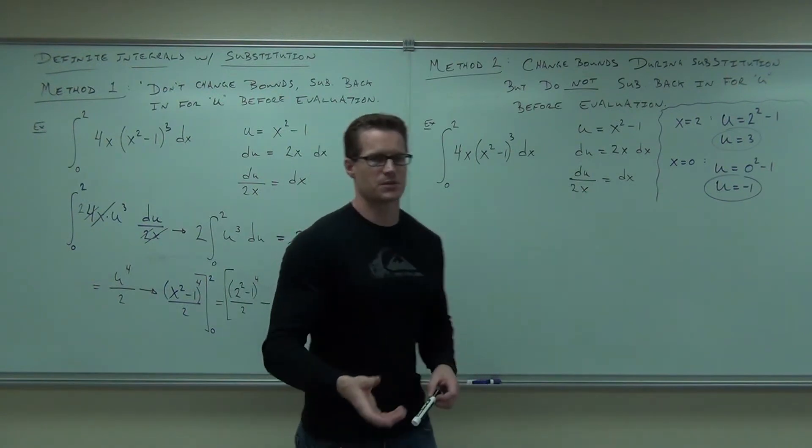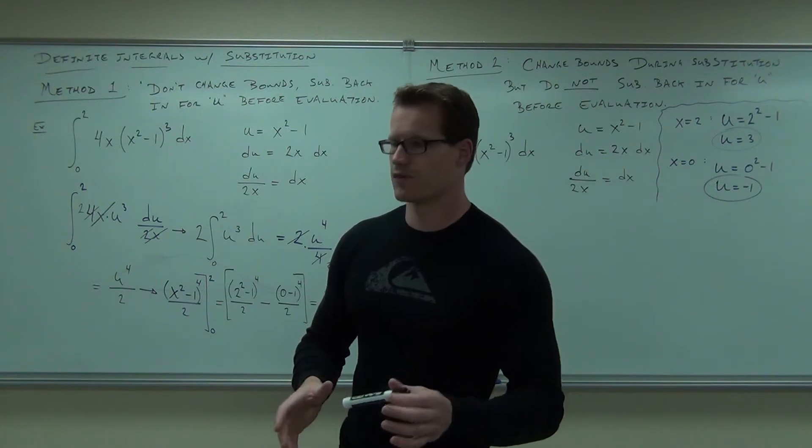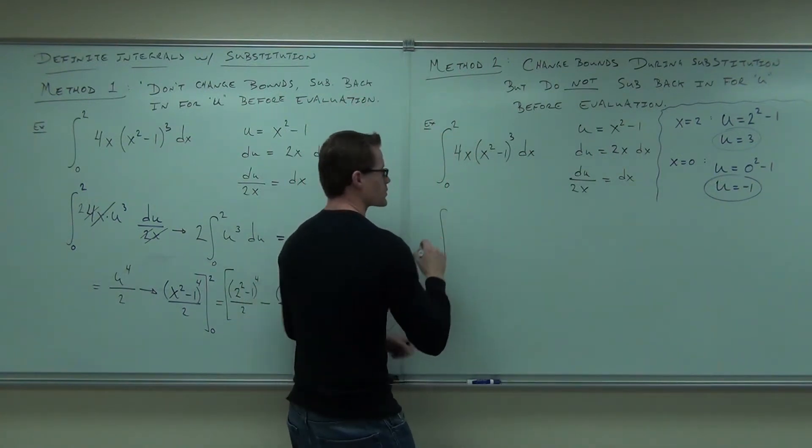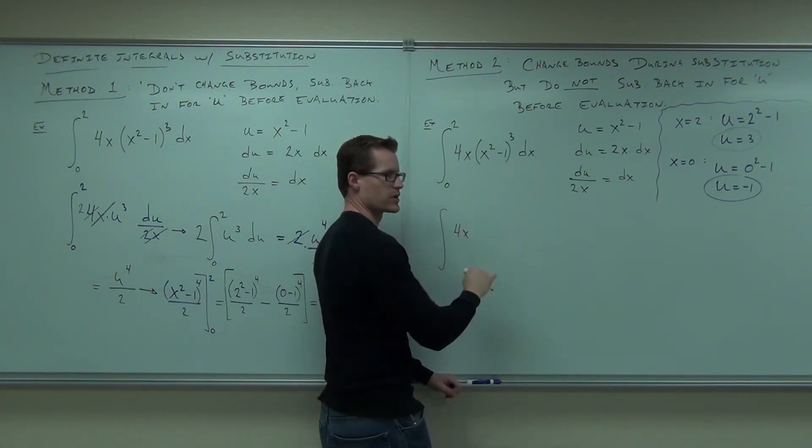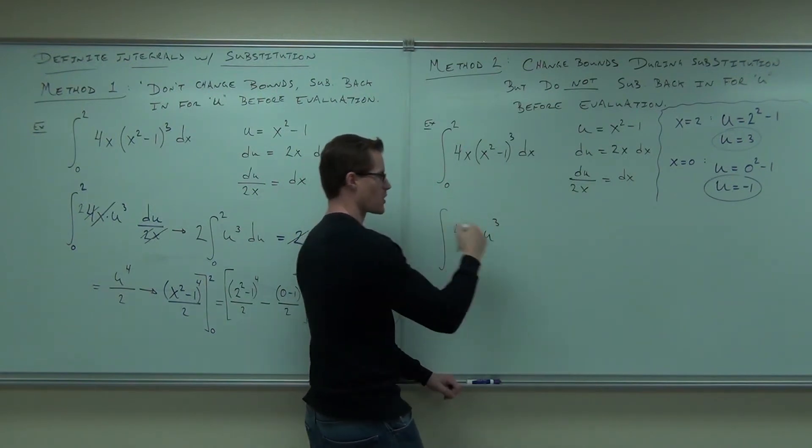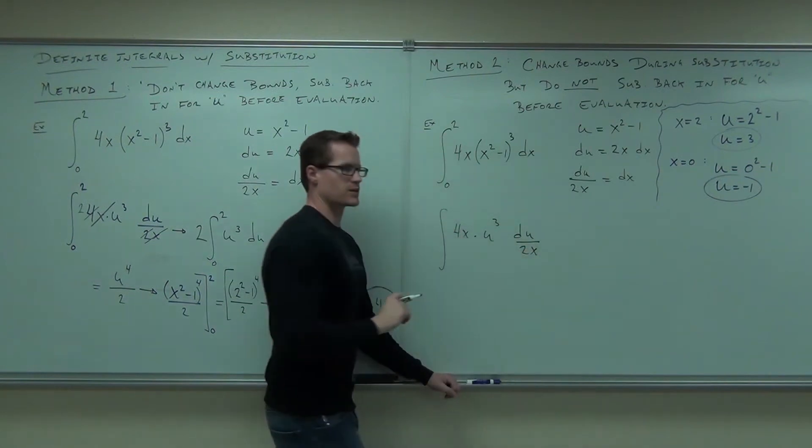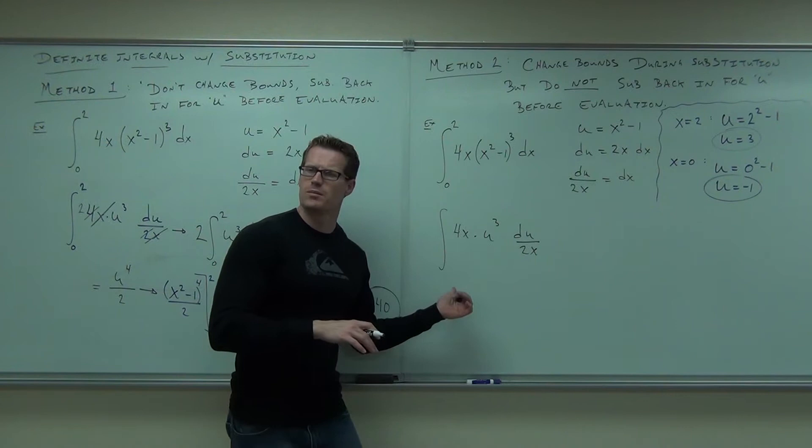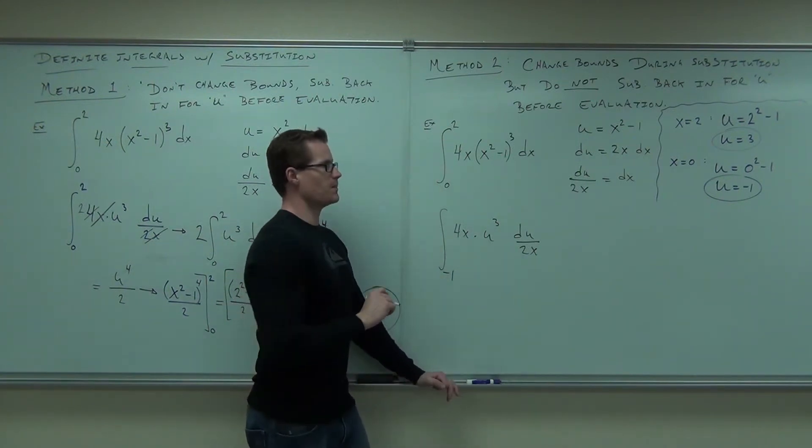Well, now we can make a substitution with everything, and the bounds will match the variable, which is nice. So let's do it. Do we still have the 4x? Of course. Do we still have the x squared minus 1? Of course not. That was our u. Notice how it's going to look exactly the same as the previous problem. du over 2x. The only thing that's going to be different is what? Our bounds. What did the 0 become? Negative 1. What did the 2 become? 3.